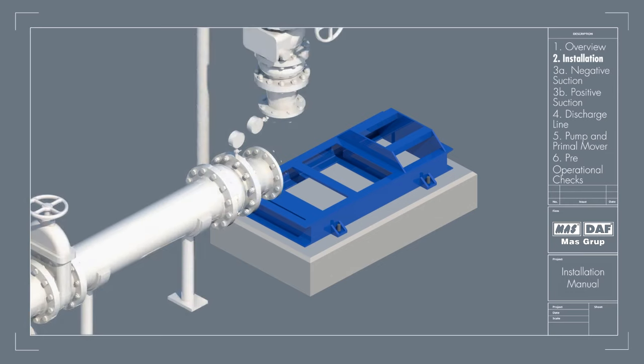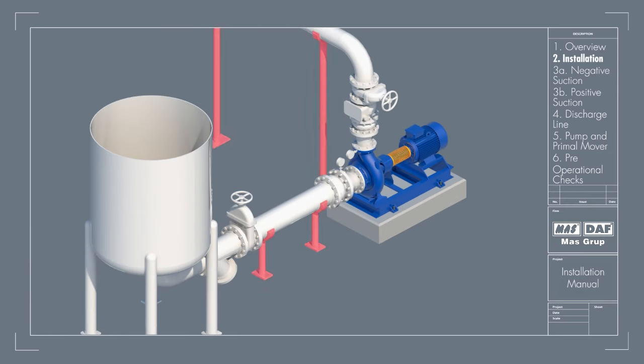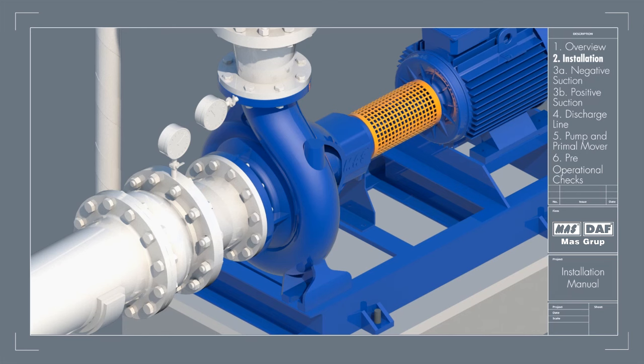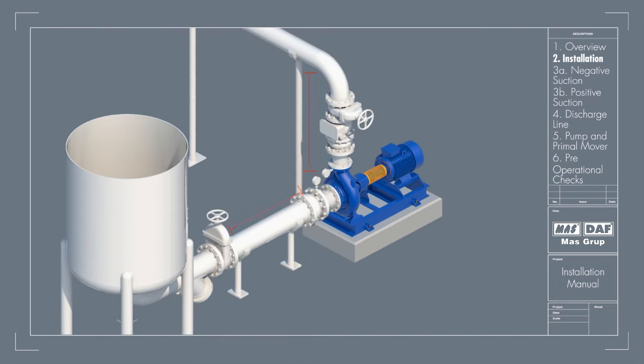Piping associated with the pump must be supported independently of the pump and should never put any strain on the pump casing. When the pipes are not supported, their weight is covered by the pump casing and this situation may cause cracks on the pump casing. It is important that the connections are aligned axially, angularly and in length carefully.